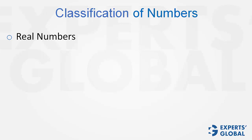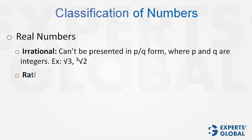Classification of numbers. We deal with only real numbers on GMAT. There are no complex numbers. Real numbers can be classified into two types, irrational numbers and rational numbers.